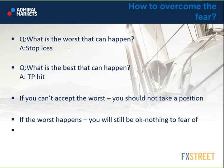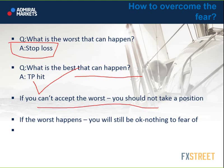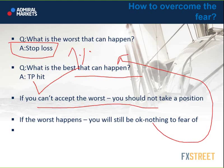Ask yourself: what is the worst thing that can happen? The answer is a stop loss hit — that's the worst thing. No one will kill you if you make a bad trade, and no one will think of you as a bad trader. If you can take your stop loss, you're good — you know when to stop your loss. What is the best thing that can happen? Target price hit. Take a deep breath, relax yourself. If you still cannot accept the worst, you should definitely not take any position. But if the worst happens, you will still be okay — it's only 1% of your account.